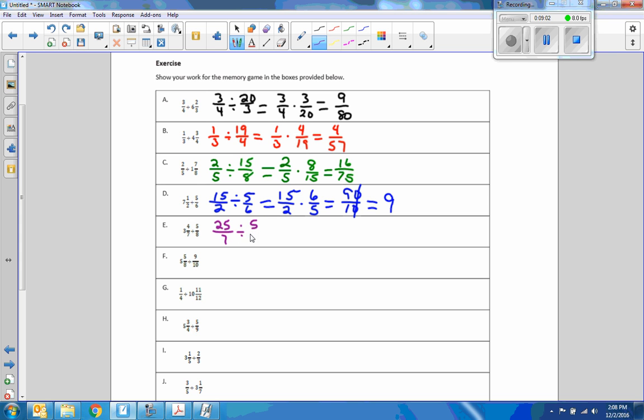Problem E. Seven times three is 21 plus four is 25 over seven, divided by five over eight equals 25 over seven times eight over five. 25 times eight, two times five times eight is 200, seven times five is 35. Five goes into 35 seven times, five goes into 200 forty times. Still improper. Seven goes into 40 five times with remainder five. Five and five-sevenths.